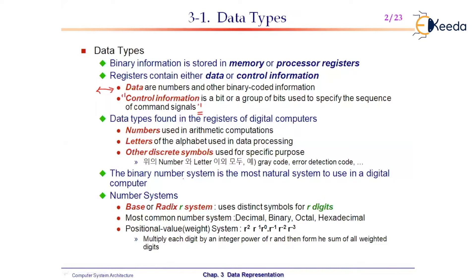In the decimal number system we have 10 symbols. For letters, the keyboard has A to Z. In addition, there are special characters such as asterisk or hash. We need all these numbers, letters, and discrete symbols to communicate with the computer system.